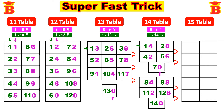Next let us write the 15th table. First step: write 5 and 0. There are two columns — in the first column write 5, and in the second column write 0. So first column: 5, 5, 5, 5, 5, 5. Next second column: 0, 0, 0, 0, 0, 0, 0.